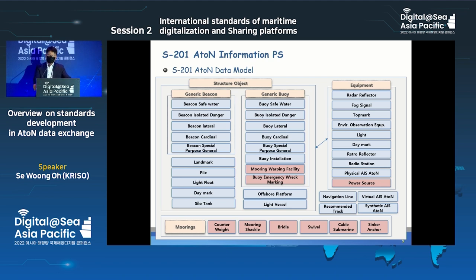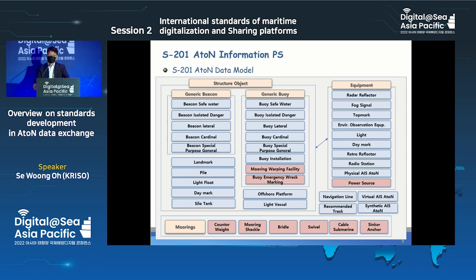This is the overview of the data models. The ATON model basically consists of structure and equipment, and there are many kinds of each in the data model. In the last year and this year's ARM meetings, we added more feature types such as structure, buoy, and mooring information, which are for maintenance and management purposes.